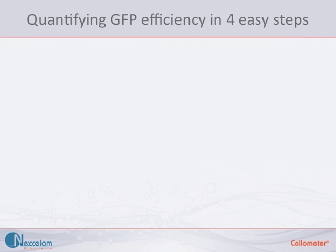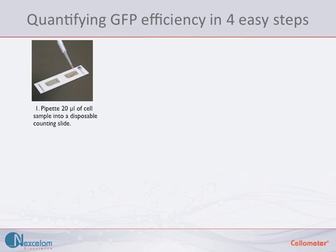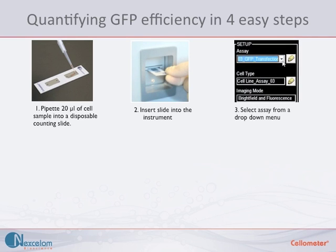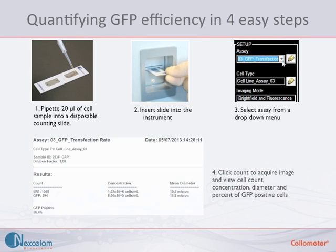Quantifying GFP can be done in four easy steps. First, pipette 20 microliters of cell sample into a disposable counting chamber. Then insert the slide into the instrument, select your assay from the drop-down menu, and click count. Within seconds, the instrument acquires images, identifies the cells with and without fluorescence, and automatically tabulates the results.